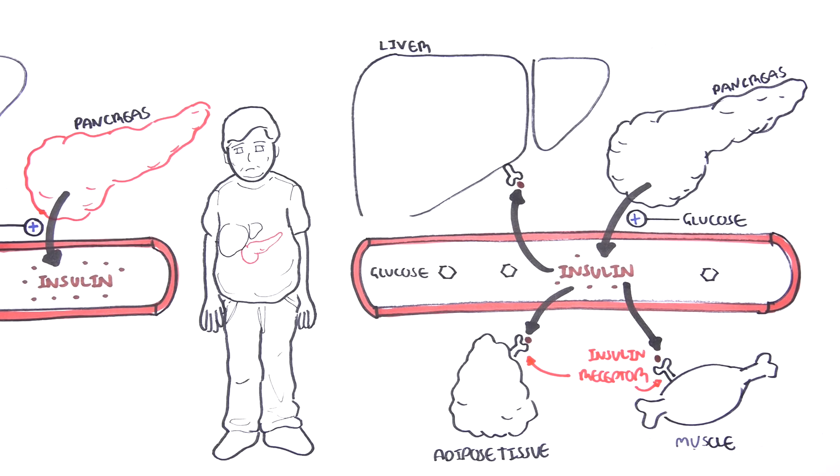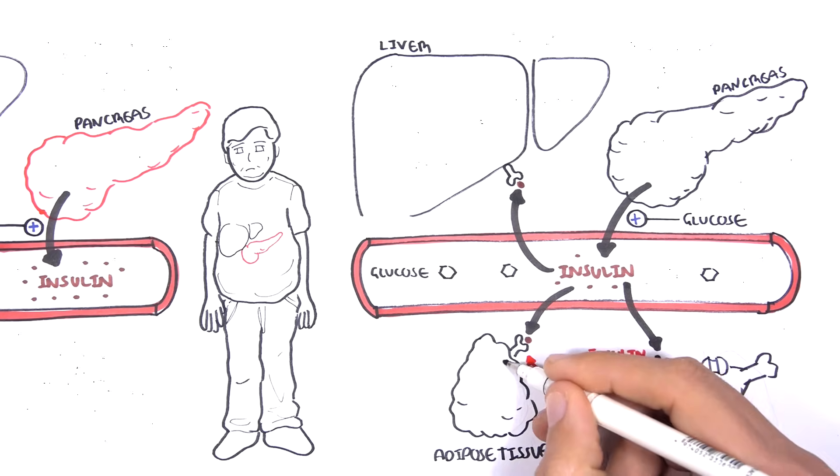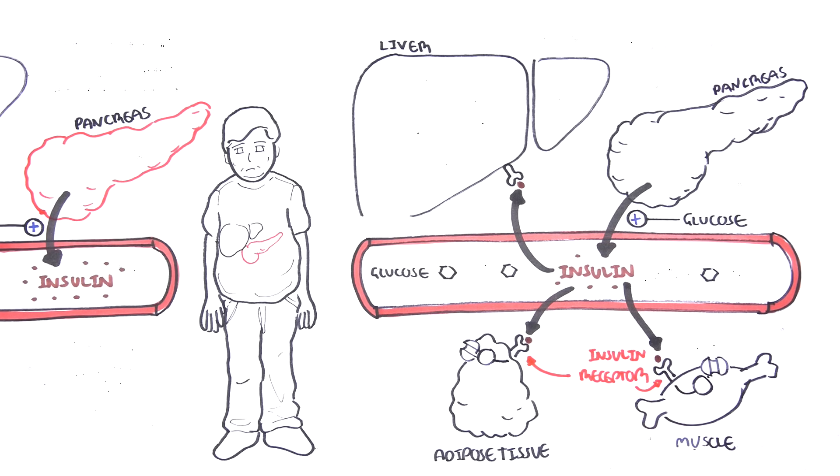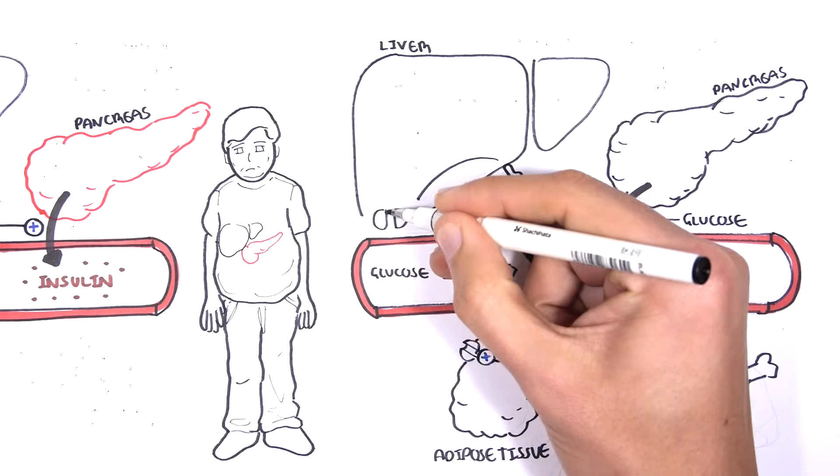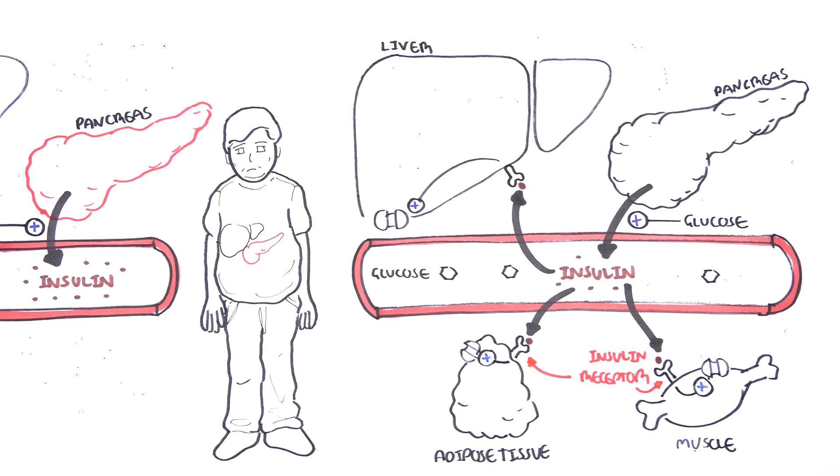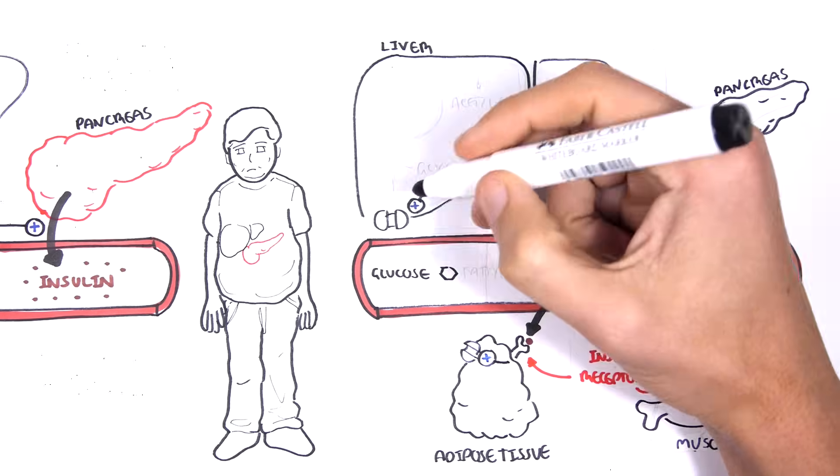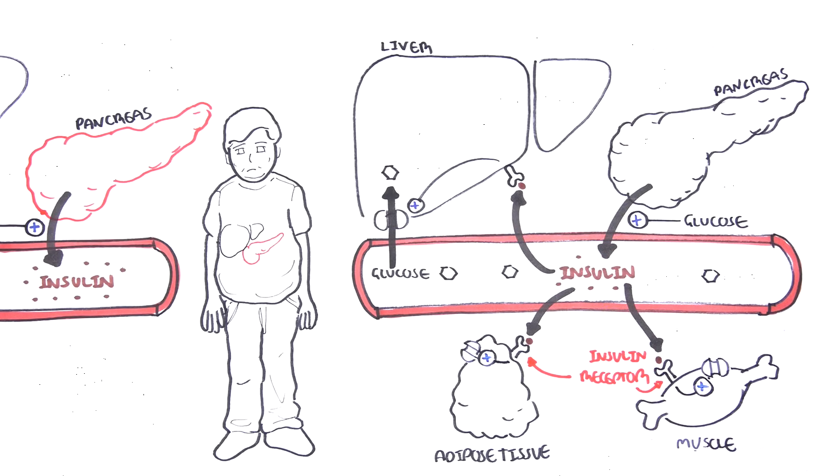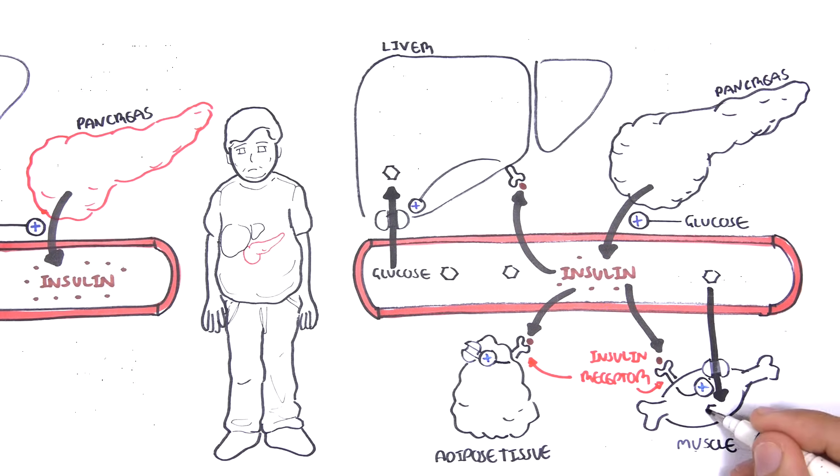The binding of insulin to its receptor or protein triggers a cascade of events within a cell leading to the increased uptake of glucose from circulation into the organs. This is done, for example, by producing more glucose channels or transporters on the surface of cells, allowing glucose to move from the blood into the cells of the organs.